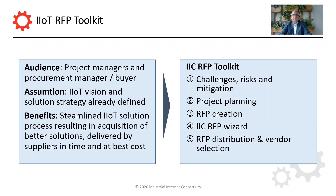The benefits for you will include getting a better quality solution from your selected vendor, as well as getting the solution delivered in time and at the best possible cost. In order to achieve this, the RFP toolkit consists of five elements: first, challenges, risks and mitigation; second, the actual project planning; third, the RFP creation, which will be supported by number four, the IIC online RFP wizard, which will help you create the initial draft of your RFP document; and last but not least, number five, RFP distribution and vendor selection.